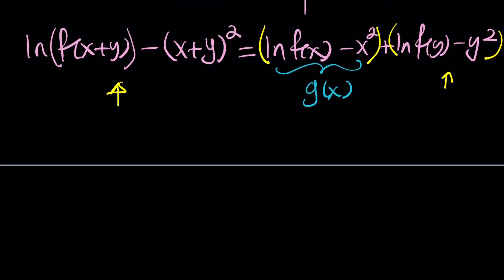In other words, if we set ln f of x minus x squared equal to another function like g of x, then we get the following. This becomes g of x plus y because we're basically just replacing x with x plus y. And then on the right-hand side, we see g of x plus g of y. That kind of brings us back to Cauchy's functional equation, which is nice.